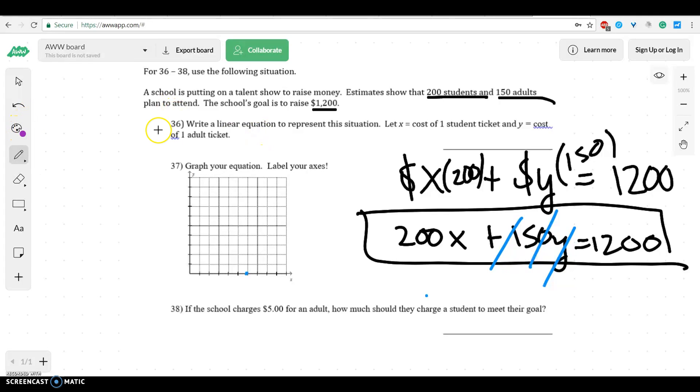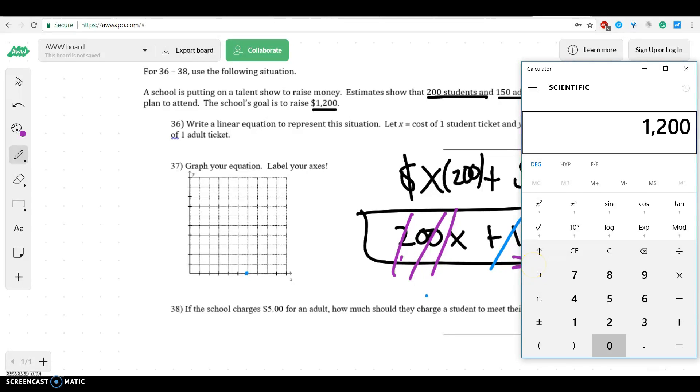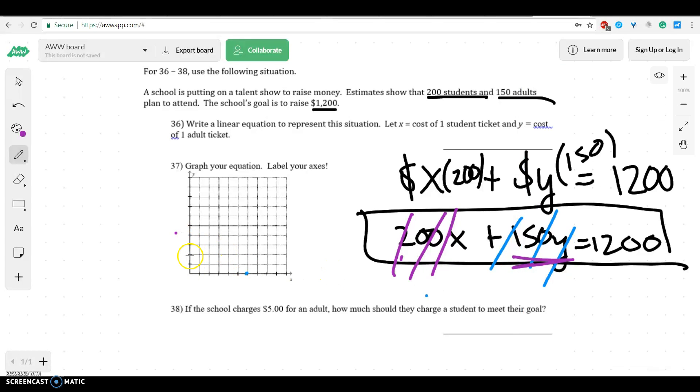And now we would do that with our adults. So now we cover up our students and we just care about the adults. So 1,200 divided by 150, and we get 8. So I'd count up 1, 2, 3, 4, 5, 6, 7, 8. And there is our line that we graphed.